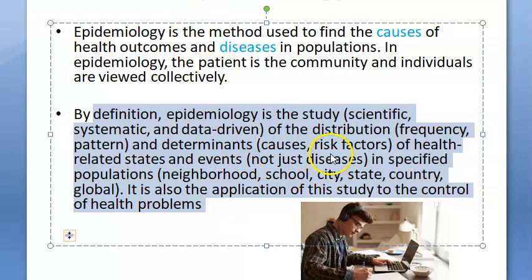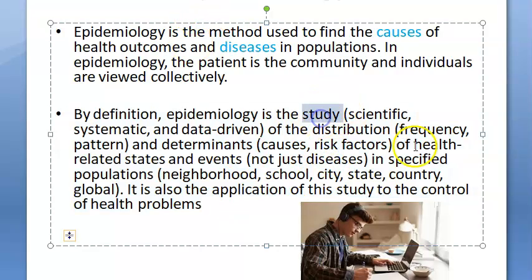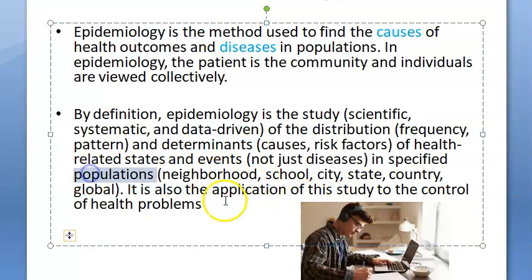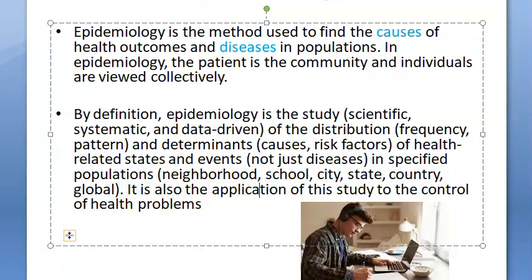So it is a scientific, systematic, data-driven study. Distribution means the frequency and pattern of the health event or health state. Determinants means the causes or risk factors. Population can be a neighborhood, school, city, state, country, or even the world. That's the full definition of epidemiology.